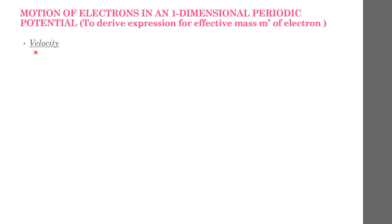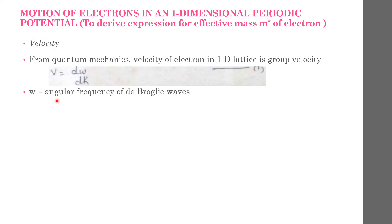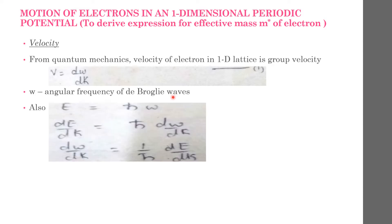Now we will derive the velocity of the electron from quantum mechanics. The velocity of the electron in a one-dimensional lattice is given by the group velocity: v = dω/dk, equation 1, where ω is the angular frequency of the de Broglie waves. Also, E = ℏω. Differentiating with respect to k: dE/dk = ℏ dω/dk, which rearranges to dω/dk = (1/ℏ)(dE/dk), equation 2.